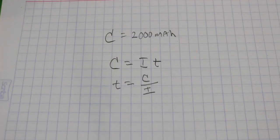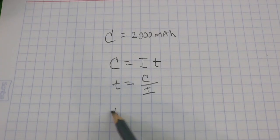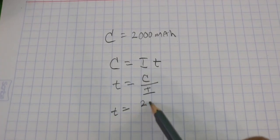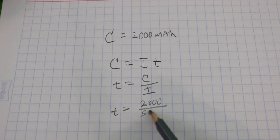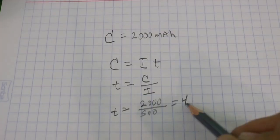For example, if we draw 500 milliamps from this particular battery, then the time will be 2000 milliamp hours divided by 500 milliamps, and this will be 4 hours.